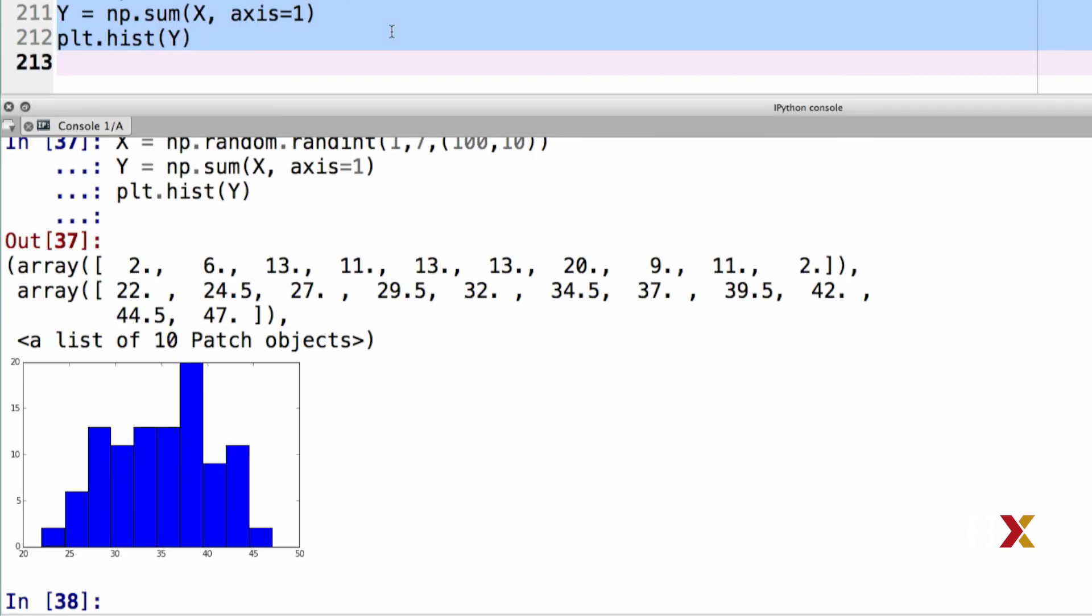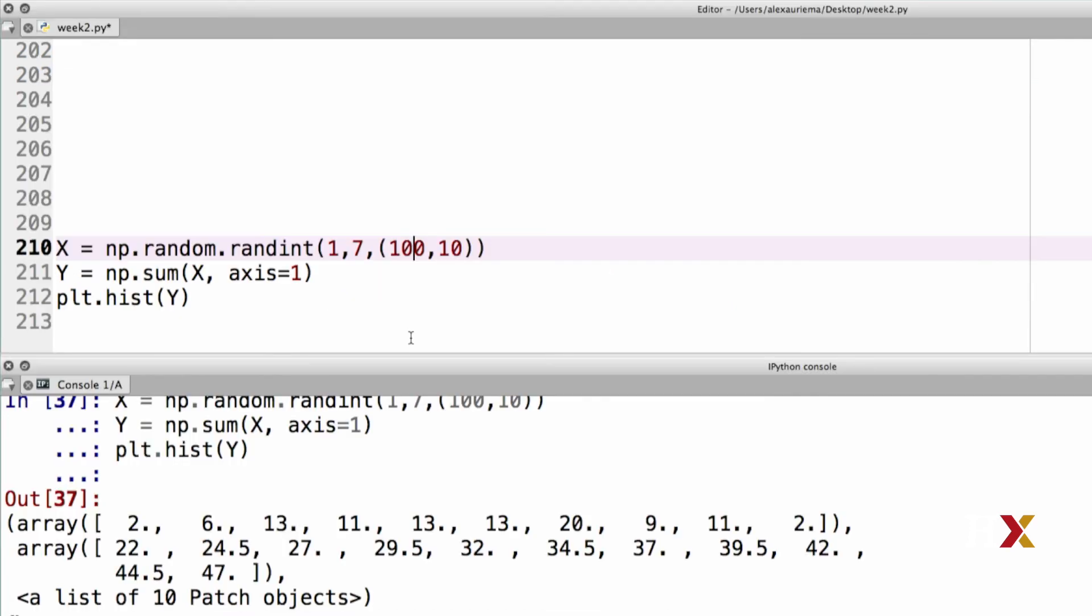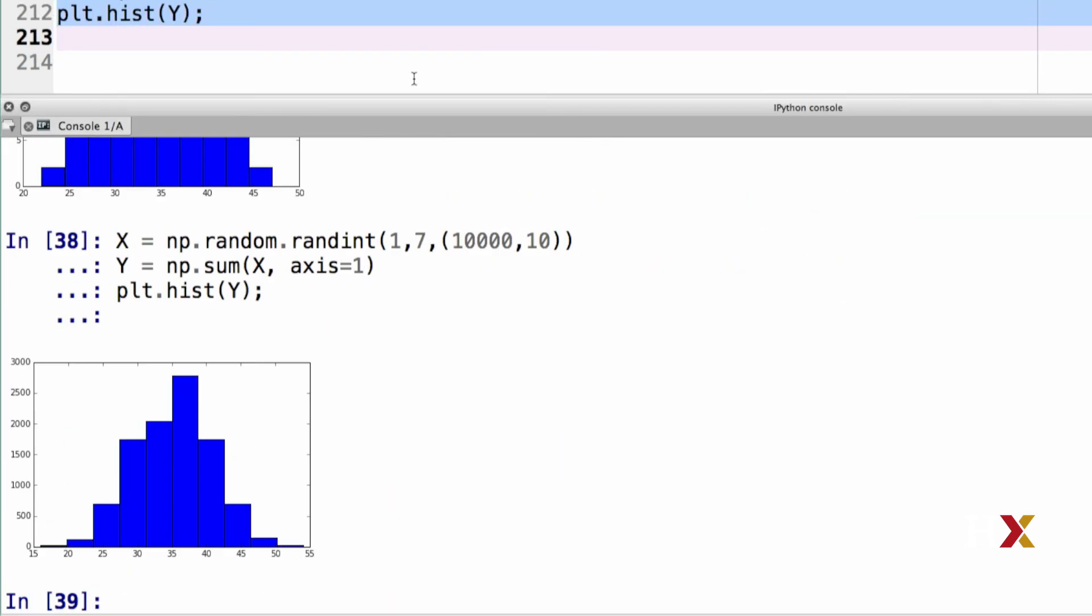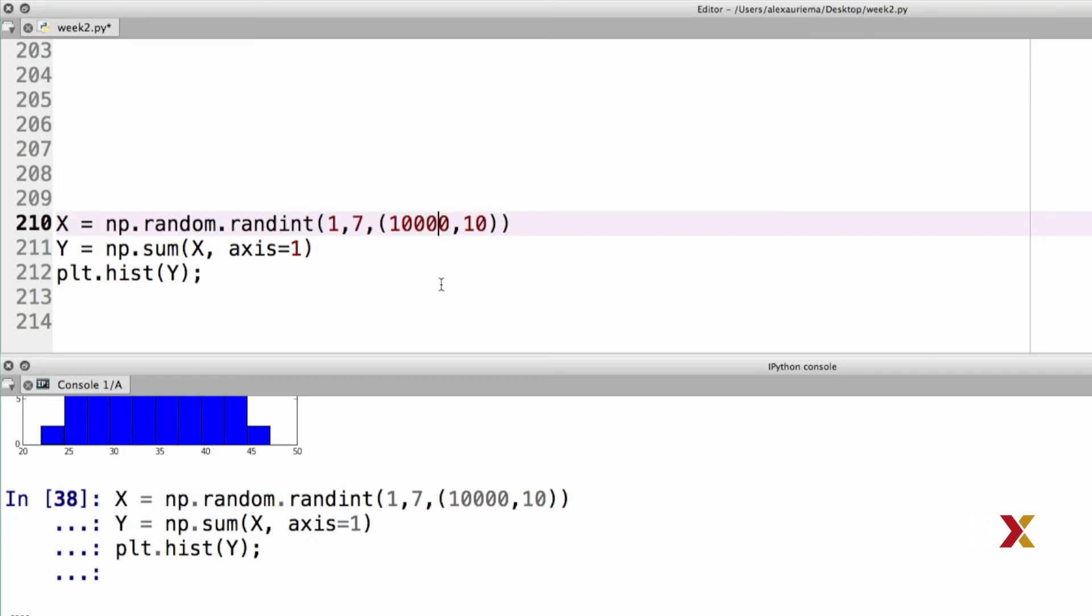In this case, we see that Python plots a histogram, which looks very similar to the histogram we saw before. But let's see what happens as we increase the number of rows in our table. I'm going to go back to my code and modify the 100 to 10,000. I will also put a semicolon at the end of plt.hist to suppress the output of the histogram function. And we can see that the histogram looks smoother.